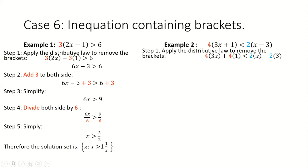Our next step is to simplify. When we simplify: 4 times 3x gives us 12x; 4 times 1 gives us 4; 2 times x gives us 2x; and negative 2 times 3 gives us negative 6. Note at this stage we have x terms on both sides and constant terms on both sides.